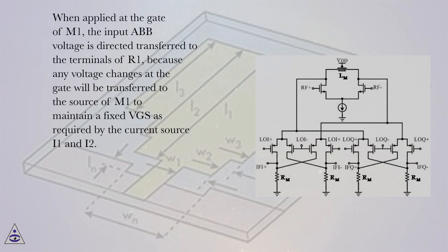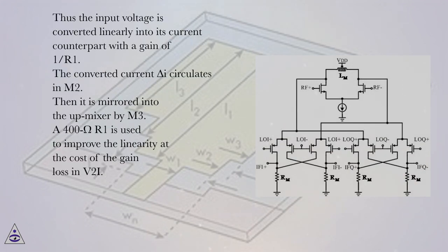When applied at the gate of M1, the input ABB voltage is directly transferred to the terminals of R1, because any voltage changes at the gate will be transferred to the source of M1 to maintain a fixed VGS as required by the current source I1 and I2.